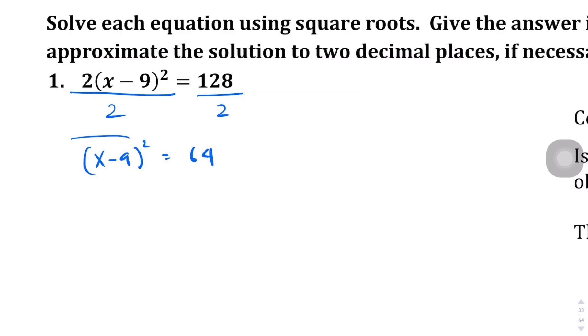And now we get to deal with this exponent here. And the way we deal with it is we're going to take the square root of both sides and you end up with x minus 9 equals plus or minus 8 because that happens to be the solution of the square root of 64.